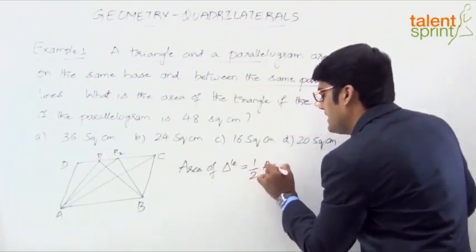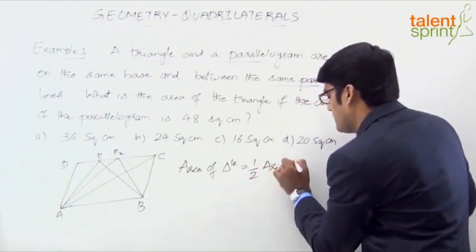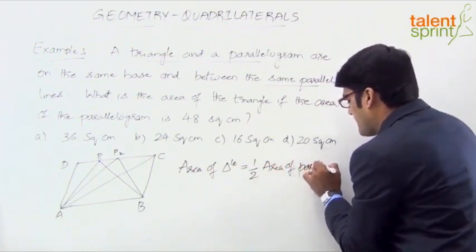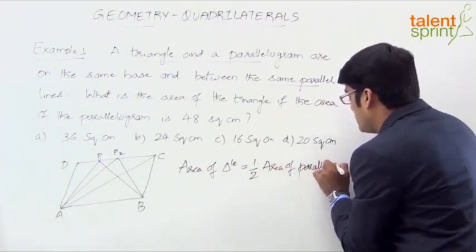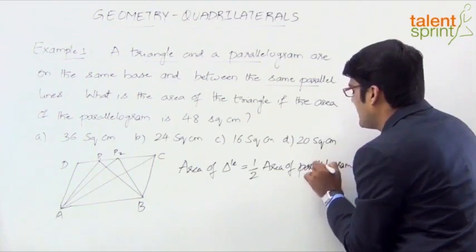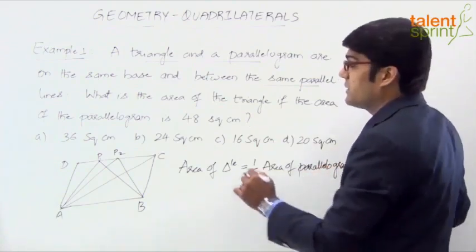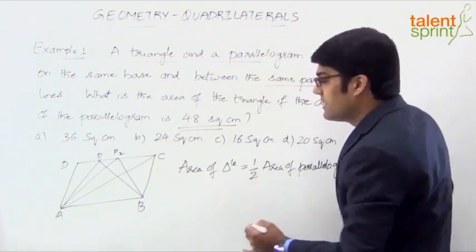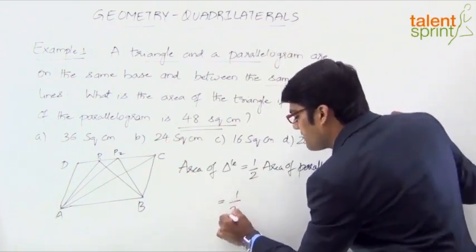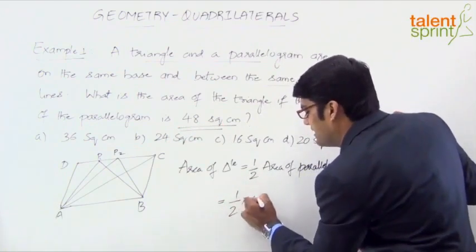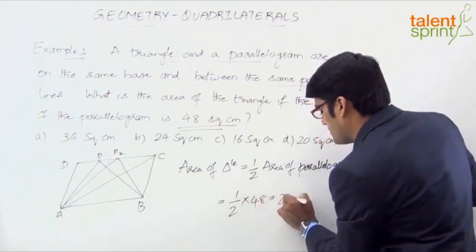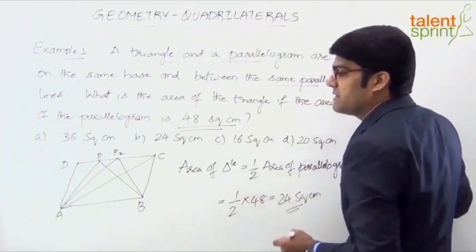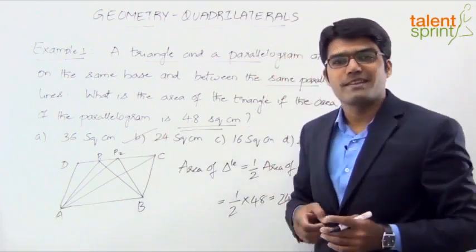Just remember: area of the triangle equals half of the area of the parallelogram. If you know this, it doesn't take any time to mark the answer. The question says the area of the parallelogram is 48 square centimeters, so the area of the triangle is half of 48, which is 24. The answer is option B: 24 square centimeters.